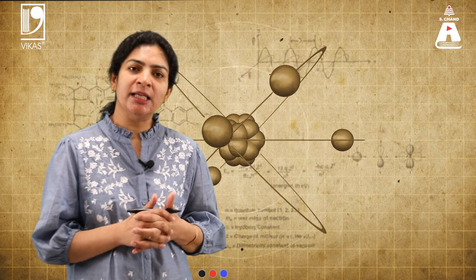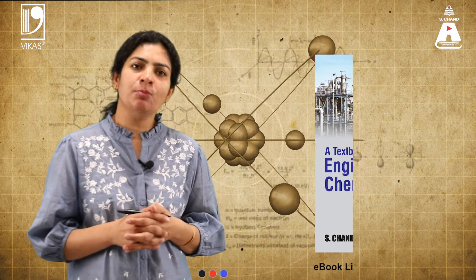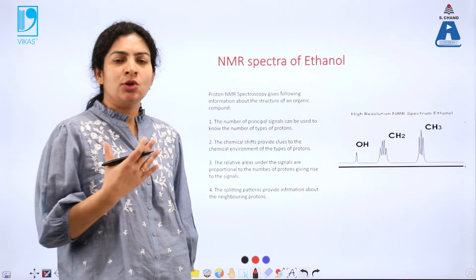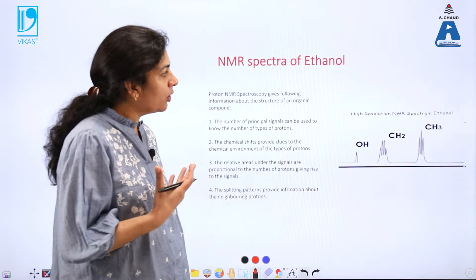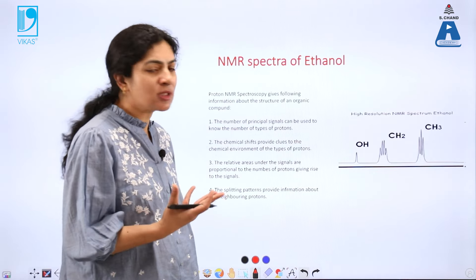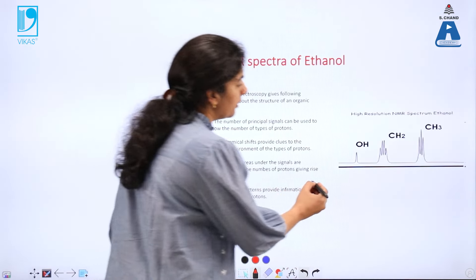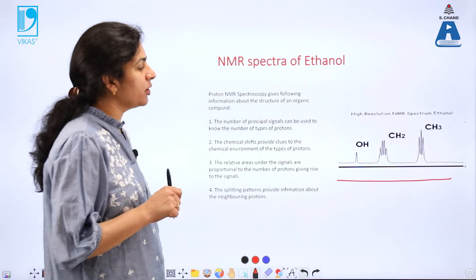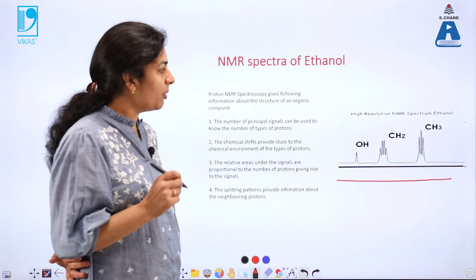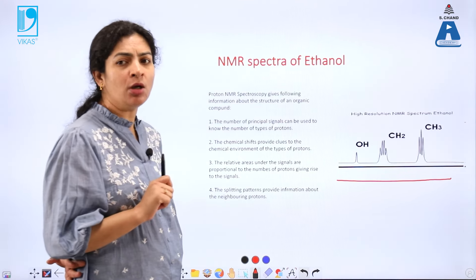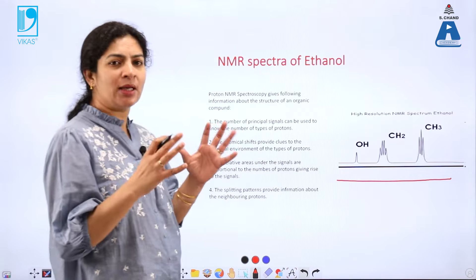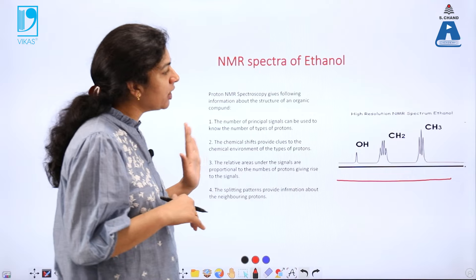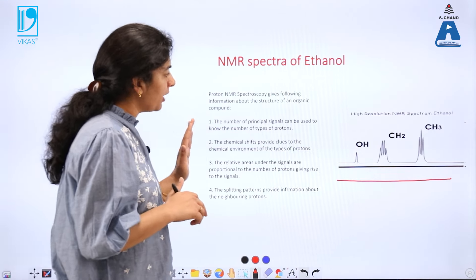To read about these topics in detail, you can refer to the book by S. Chand Publishing, the link to which is given in the description box. So let us understand how an NMR spectrum looks like. This was the first ever spectrum recorded using an NMR spectrophotometer — the NMR spectra of the ethanol molecule. This spectra is just like a storehouse of information because by understanding this spectra, we can learn many concepts of NMR spectroscopy.